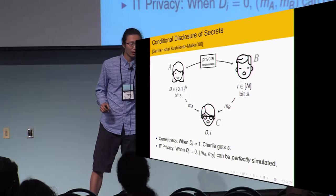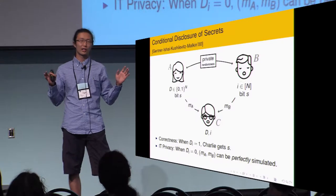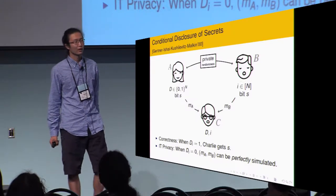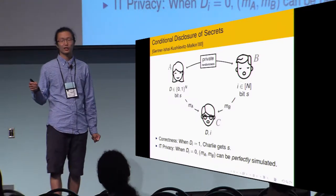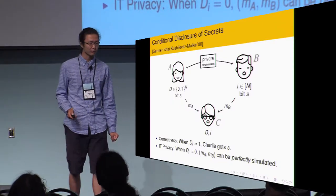Therefore, when f(i) equals zero, the joint distribution of the message should be simulatable by a simulator who doesn't know the secret. So far, it's the same as the previous talk. But in this one, we stick to the case where the Alice input, you should consider that as a truth table. So, Charlie learned the secret if and only if the i's index in the truth table is one.